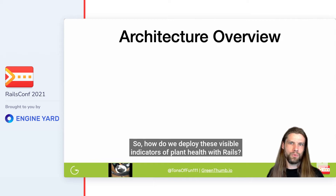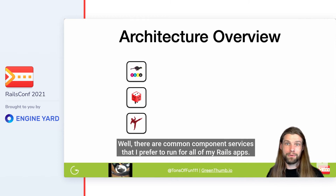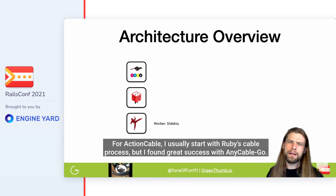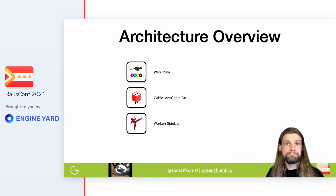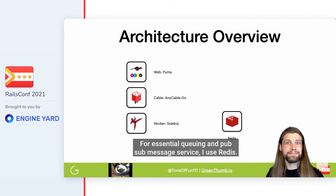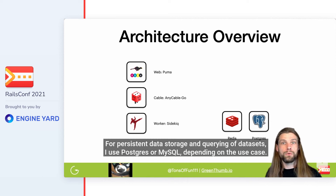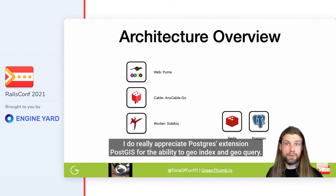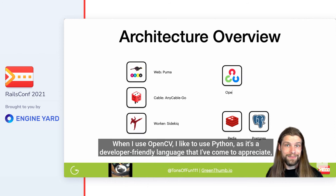So how do we deploy these visible indicators of plant health with Rails? There are common component services I prefer to run for all of my Rails apps. For workers doing background jobs, I like to use Sidekiq. For Action Cable, I usually start with Ruby's cable process, but I've found great success with AnyCable Go. For web workers, I use Puma. For essential queuing and PubSub messaging, I use Redis. For persistent data storage and querying, I use Postgres or MySQL depending on the use case. I really appreciate Postgres's PostGIS extension for the ability to geo-index and geo-query.